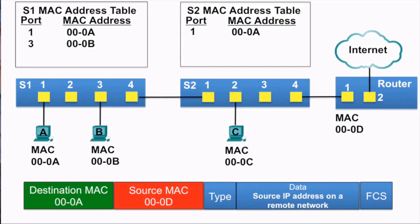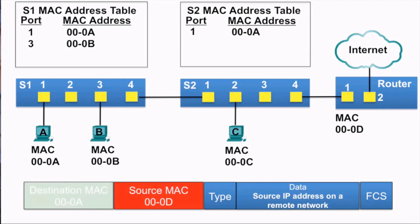Now we'll look at the Ethernet frame coming from the router back to PCA. The destination IP address is that of a device on a remote network. The source MAC address is that of the router at 000d, and the destination MAC address is that of PCA.